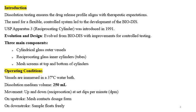It is also called the bio-diss apparatus. USP3 apparatus is called the reciprocating cylinder apparatus, and it was introduced in 1991. The design evolved from bio-diss with improvements for controlled testing.